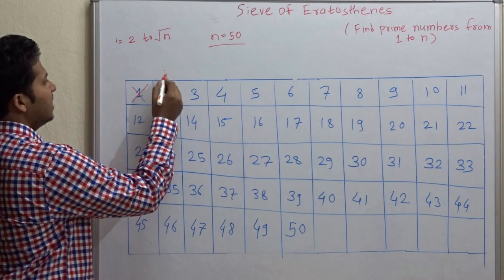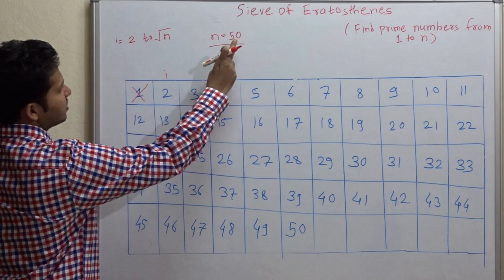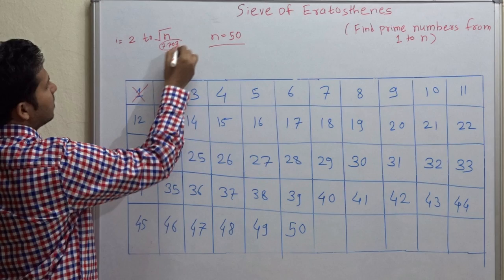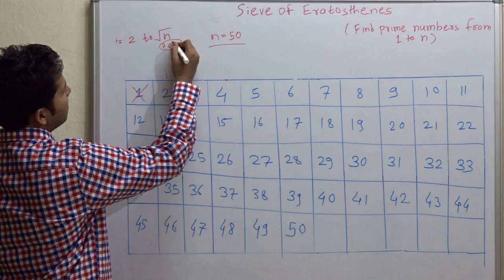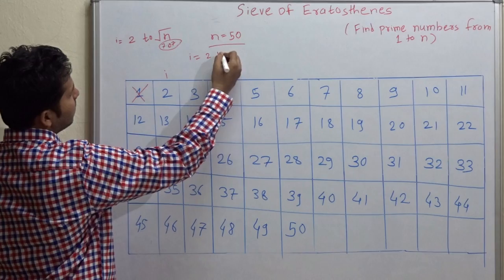This i increments from 2 to root of n. In case of this, root of 50 is 7.07, so this means that i will go from 2 to 7.